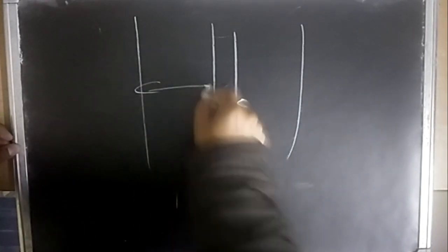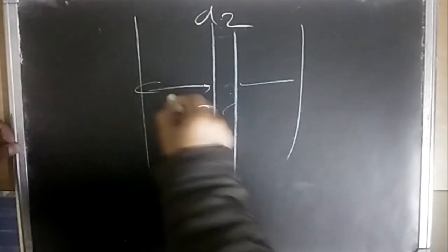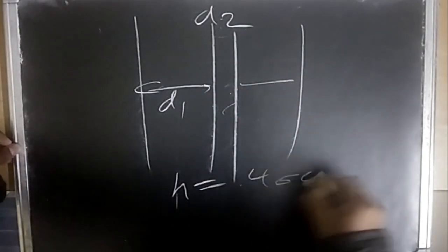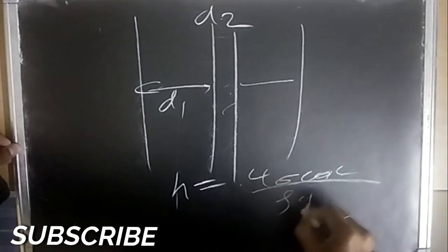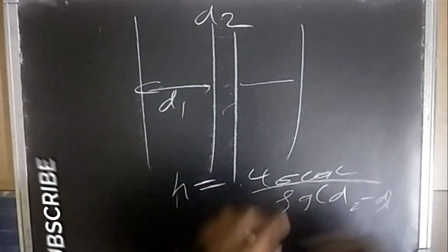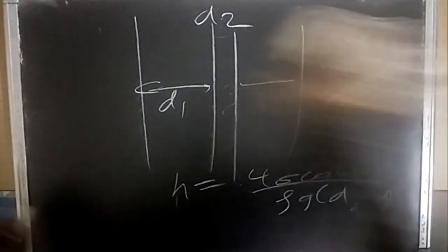One more case: if there is a capillary with some space, with outer diameter d2 and inner diameter d1, then h = 4σ·cosθ / (ρg(d2 - d1)). This is for dimensional analysis.